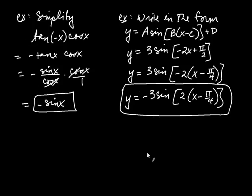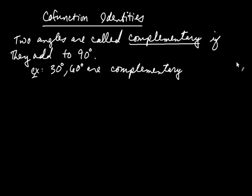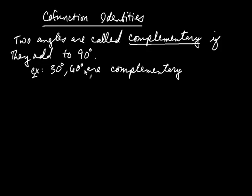Now let's look at some other useful identities called the cofunction identities. Two angles are called complementary if they add to 90 degrees — for example, 30 degrees and 60 degrees are complementary angles.